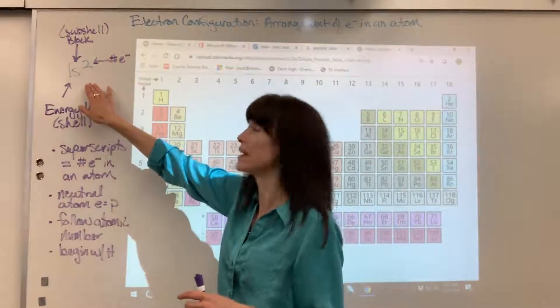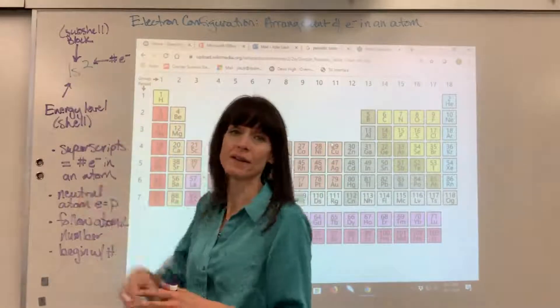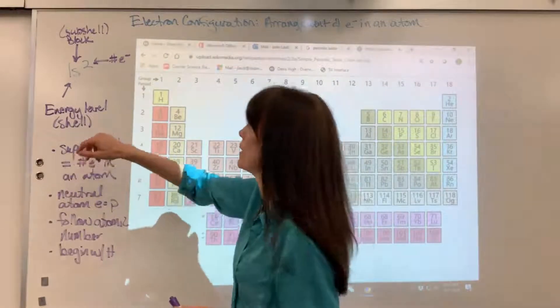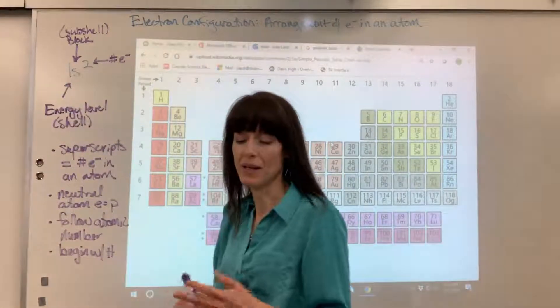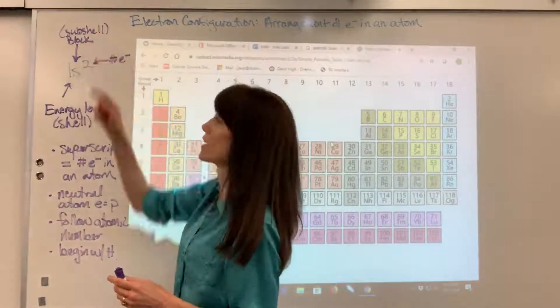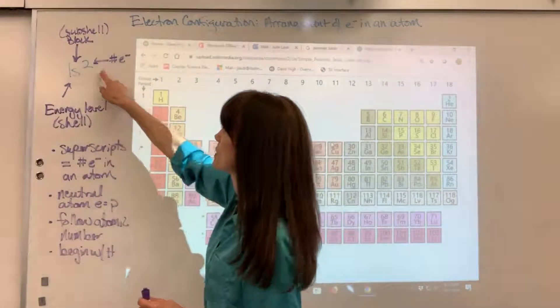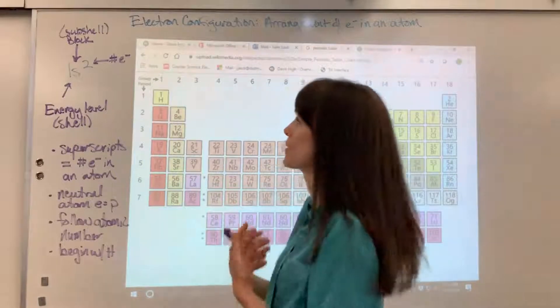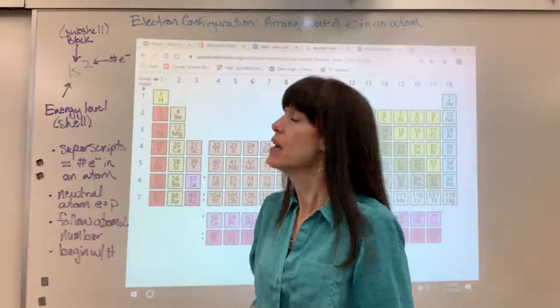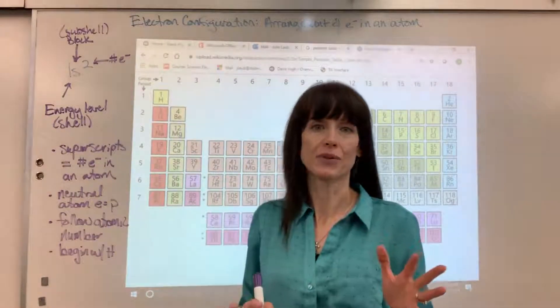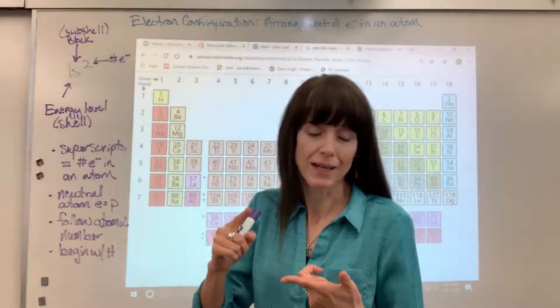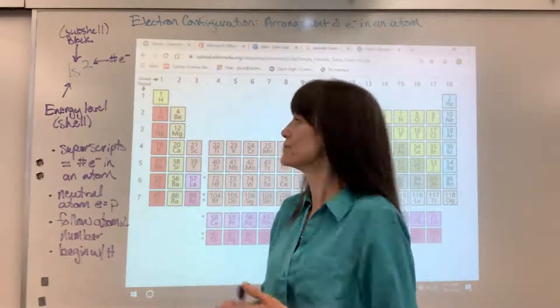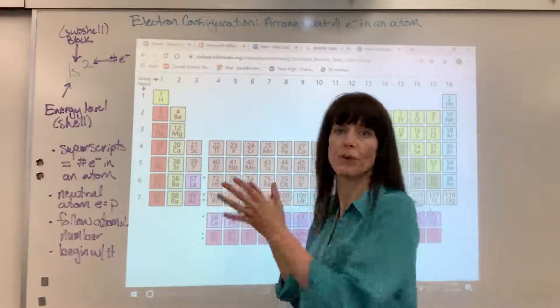This is what it looks like, this is always where you begin: 1s2. Now the 1, the large number that you write, is the energy level that's also called the shell. The letter that you have here is going to be S, P, D, or F. It's the block and that's also called the subshell. And then that superscript right there is the number of electrons that are in that particular energy level and block, that particular shell and subshell. I'm assuming that you've already gone through the basics, that you know how many maximal electrons and orbitals are in each block, that you understand periods and groups.